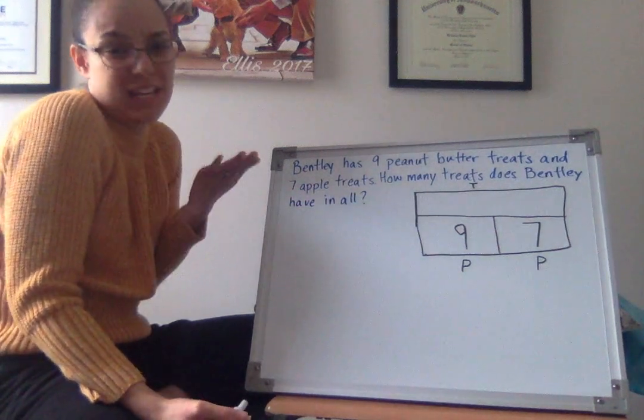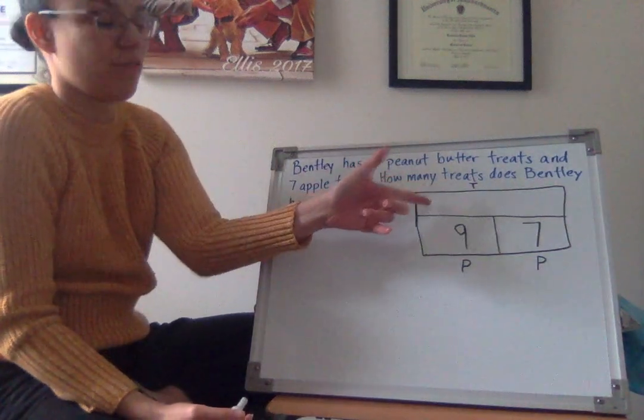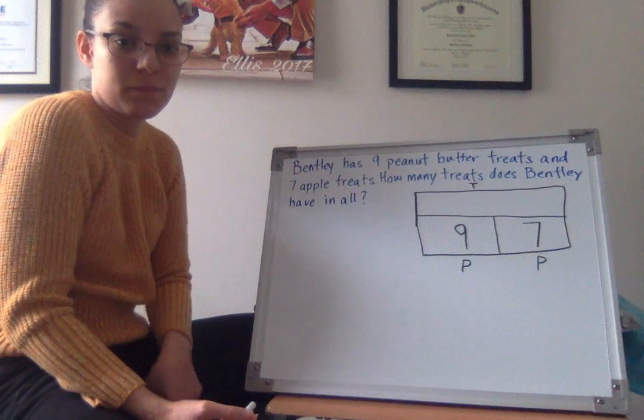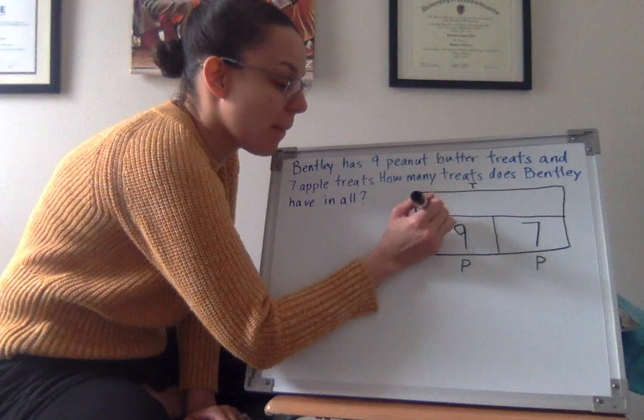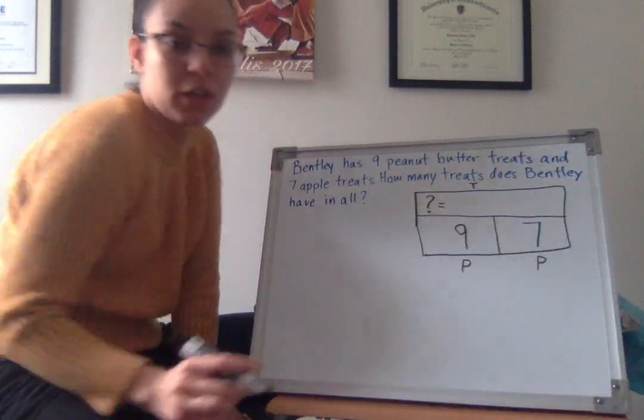And since we don't know how many they have in the total, what do you think I can write in that top box? Yeah, question mark. Because I need to remember that that's the part that we're looking for.